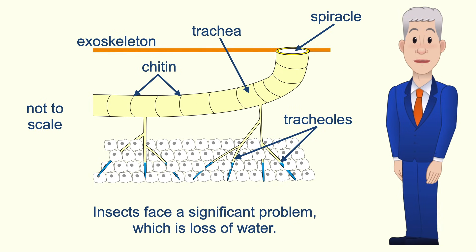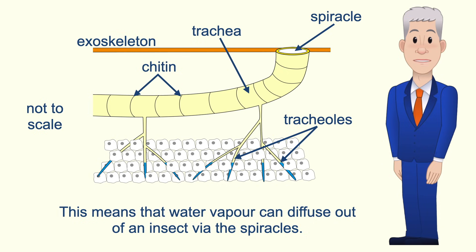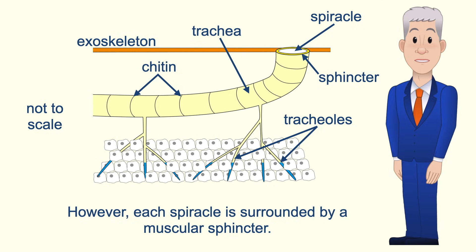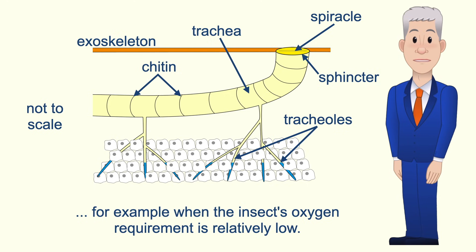Insects face a significant problem: loss of water. The walls of the tracheoles are moist and the ends of the tracheoles contain tracheal fluid, meaning that water vapor can diffuse out of an insect via the spiracles. However, each spiracle is surrounded by a muscular sphincter, and this means that insects can reduce water loss by closing their spiracles, for example when the insect's oxygen requirement is relatively low.